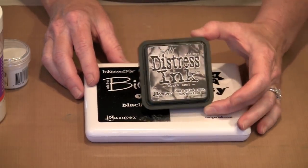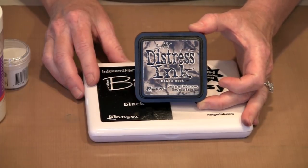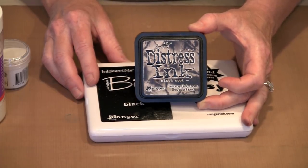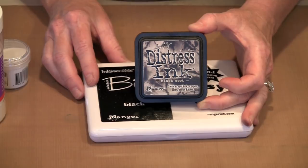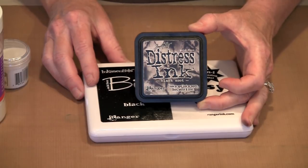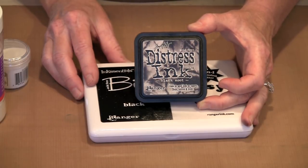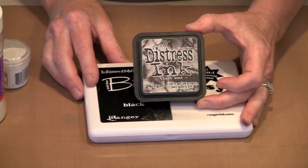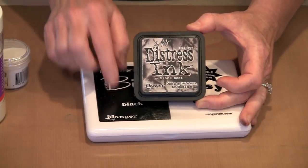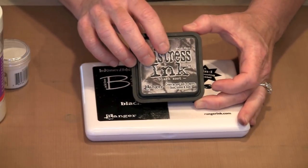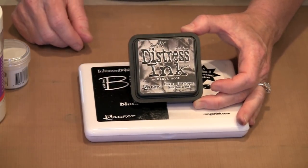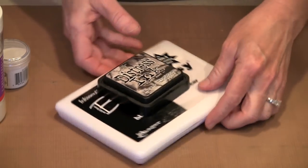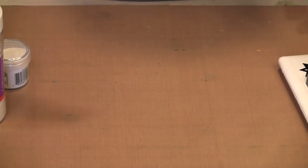Distress ink is actually a dye-based ink, but it's formulated to stay moist longer, which means you can use it to emboss. A pigment ink, which is also developed to stay moist longer and is opaque, will also be used for embossing. We're not going to use it here today. We're going to stick with this big embossing and we're going to work with Distress as well as the Distress embossing ink.